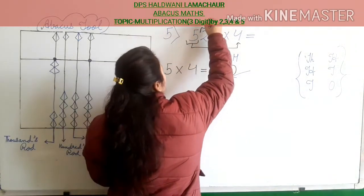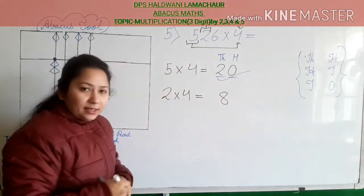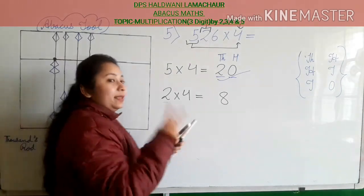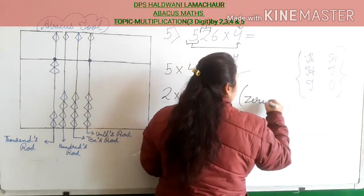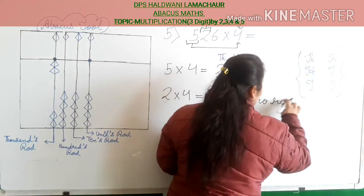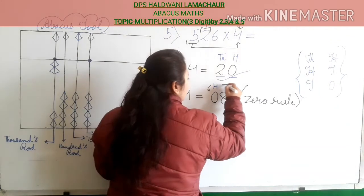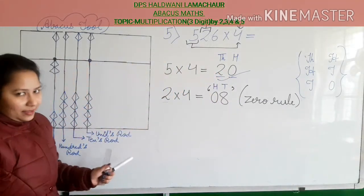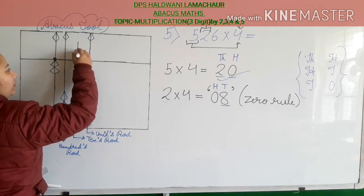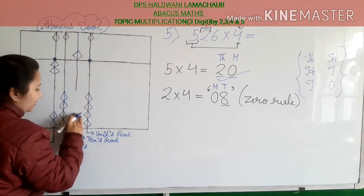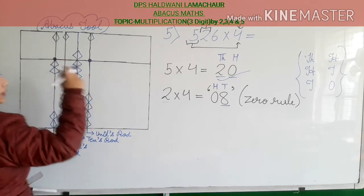Now multiply the second digit with 4: 2 into 4 is 8. You are getting a single digit number in the second place, so you will apply the zero rule — it becomes 08. The 0 goes in hundreds rod and 8 goes in tens rod. Zero in hundreds means nothing. For 8 in tens rod, take the help of 5: put 5-bead down and count 6, 7, 8 — 3 beads from below. And this is added.